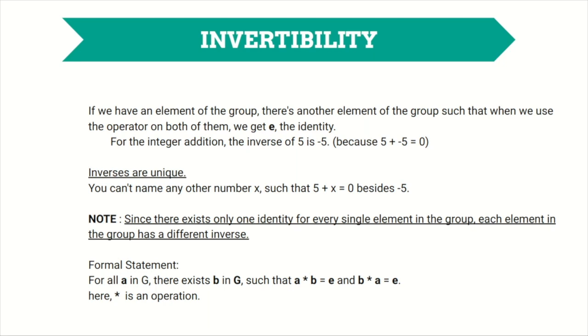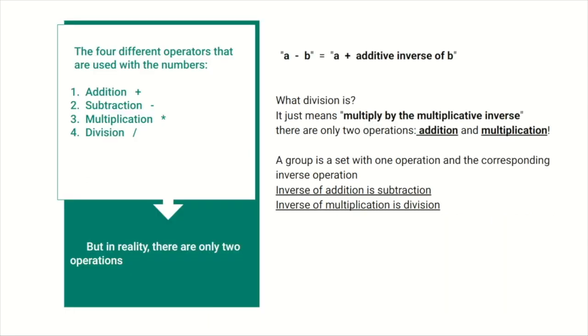The formal statement says for all a in G, there exists b in G such that a operation b equals e and b operation a equals e. Way back, we saw the four different operators that are used with numbers: addition, subtraction, multiplication, and division. But in reality, there are only two operations. When we subtract numbers, we say a minus b because it's short, but what we really mean is a plus the additive inverse of b. Can you take a guess at what division is? In the same way, it just means multiply by the multiplicative inverse. So there is really only addition and multiplication. Roughly speaking, a group is a set with an operation and the corresponding inverse operation.